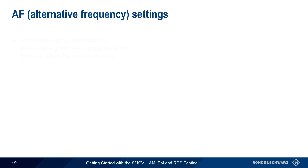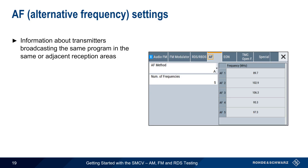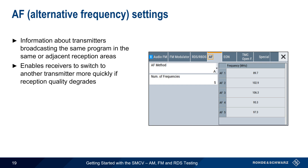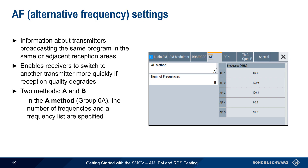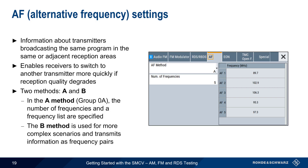RDS also includes information about transmitters broadcasting the same program on multiple frequencies. The AF, or alternative frequency parameters, reduce the time needed for a receiver to switch to another transmitter when reception is degraded on the current frequency. When configuring AF, either Method A or Method B can be used. Method A, sent in group 0A, simply sends the number of alternative frequencies and then a list of those frequencies. Method B is used for more complex scenarios and transmits information in the form of frequency pairs.